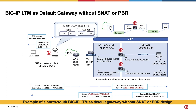One of these two design options is to make BigIP-LTM the default gateway of the real servers. Because BigIP-LTM is in the traffic path based on routing, both incoming and returning traffic will always go through the same BigIP-LTM.